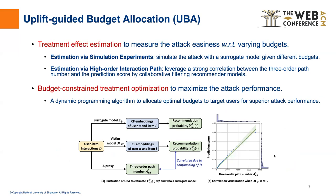To estimate the attack easiness of different target users, we propose two estimation methods. One is using simulation experiments with a surrogate model, while the other is using the high-order path number on the user-item interaction graph. Empirical and theoretical analysis have validated the rationality of these two estimation methods.